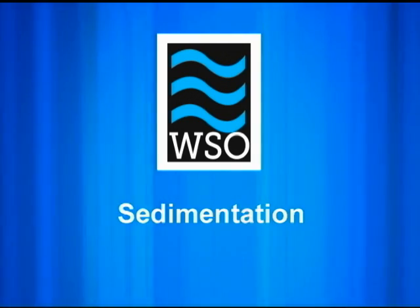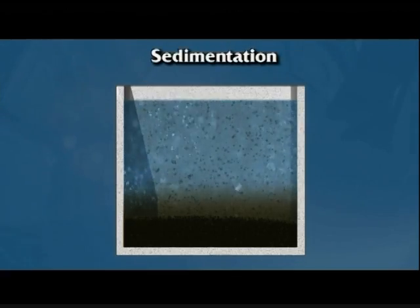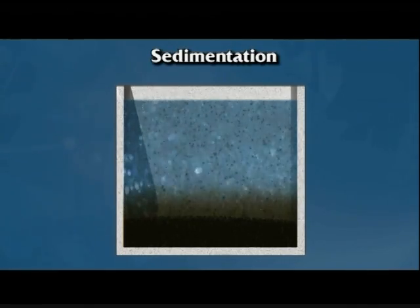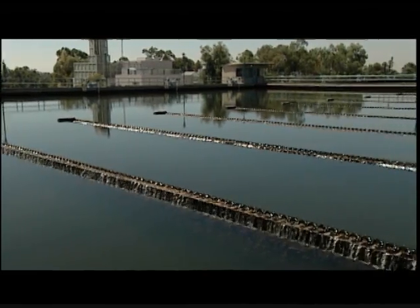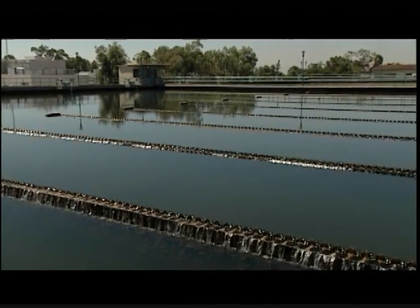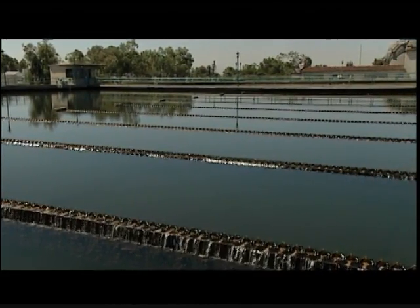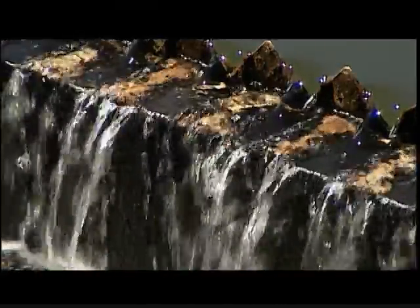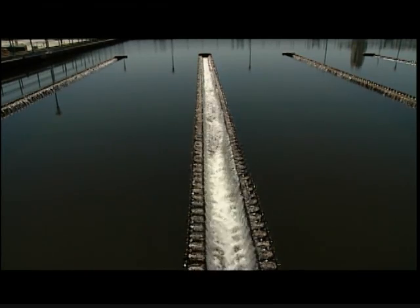Once proper floc has formed, it must be separated from the water through sedimentation or clarification. This process takes place in a rectangular, square, or round tank called a sedimentation basin or clarifier. It should be noted that direct filtration plants do not include a sedimentation or clarification unit process.